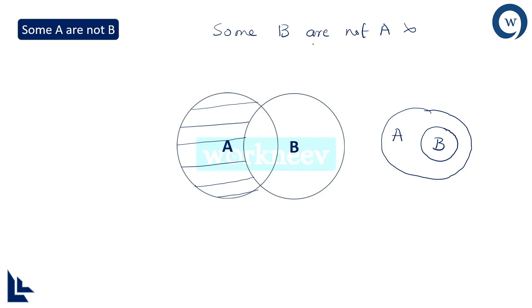For example, imagine A is a large circle and B is a smaller circle fully inside A. Some A are not B is perfectly valid because there are some portions in A which are not in B. But can I say Some B are not A? That is not possible here because all B belongs to A. A conclusion is valid only if it is true in all possible Venn diagrams. That is why while solving problems on Some A are not B, you have to be extra conscious.